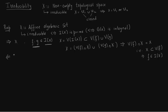Now in the reverse direction, we prove by contradiction. Suppose I(X) is prime and X is also reducible — that is, you can express X as a union of two non-empty sets V1 and V2, where V1 is closed and V2 is closed. Both are non-empty, meaning V1 is a proper subset of X and V2 is also a proper subset of X.